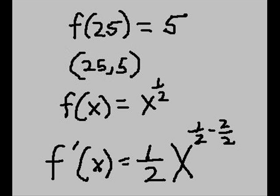f of 25 equals 5, and I have the point (25, 5). Now I said I've got to take the derivative of f(x). f(x) equals x to the one-half power. f prime of x will be one-half x to the one-half minus two-halves power.